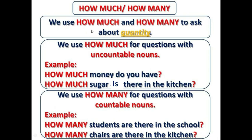We use 'how much' and 'how many' to ask about quantity. We use 'how much' for questions with uncountable nouns. For example: how much money do you have? How much sugar is there in the kitchen? Then 'how many' — we use 'how many' for questions with countable nouns. How many students are there in the school? How many chairs are there in the kitchen? So 'how much' is used with uncountable nouns and 'how many' is used with countable nouns.